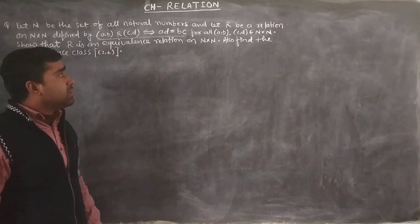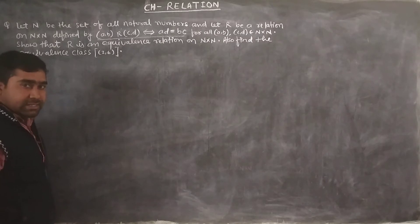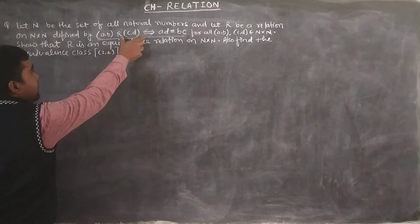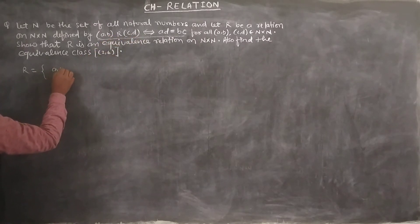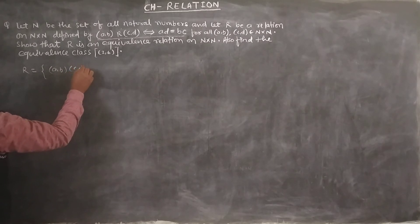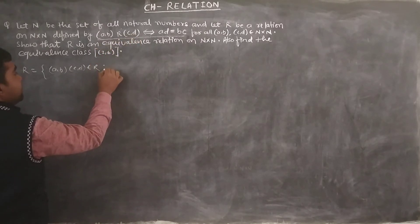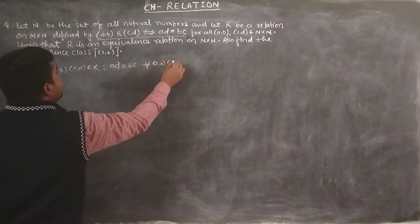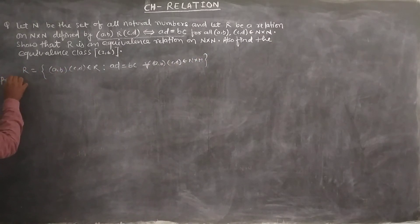Show that R is an equivalence relation on N×N, and also find the equivalence classes of (2,6). For equivalence relation, we need to check three properties: first reflexive, then symmetric, and then transitive. If all three are satisfied, the given relation is an equivalence relation.